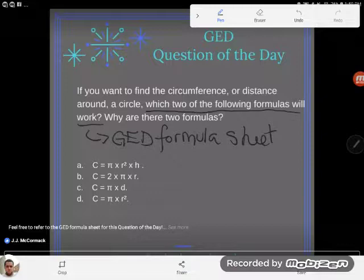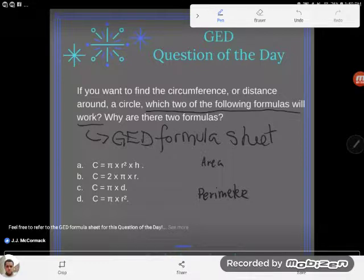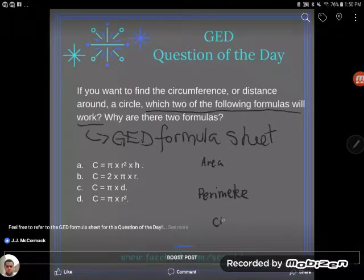So if you look at that GED formula sheet, the first thing you're going to see on there is an area section, but then under that you see a perimeter section. Under perimeter, remember perimeter is the line around the outside of a shape. And for a circle, the perimeter has a special name. We call that the circumference of a circle. That's the line outside of a circle.